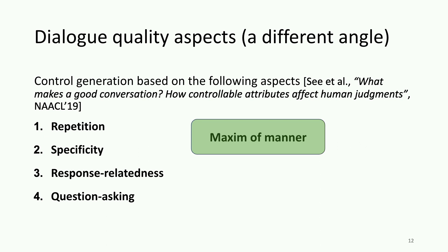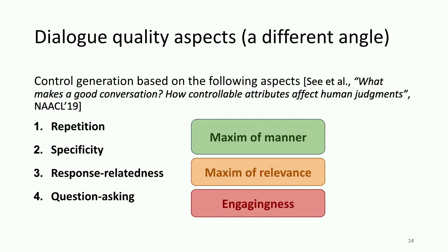I find these lower-level attributes to be very aligned with Grice's maxims. For example, repetition and specificity can be classified under the maxim of manner. Response relatedness can be related to the maxim of relevance, where Paul Grice argued that our responses should be very relevant to what we have said before. And question asking can be classified under the property of engagingness, because in open-ended dialogue systems we want the conversation to be engaging, to keep going, and to be interactive — so by asking questions we can make conversation more interesting.